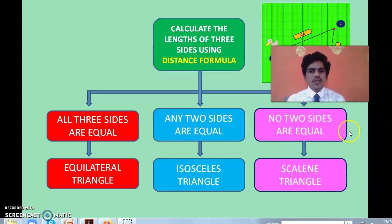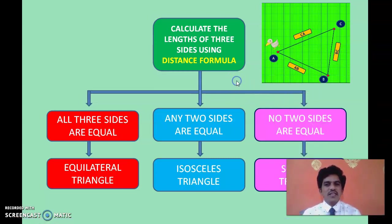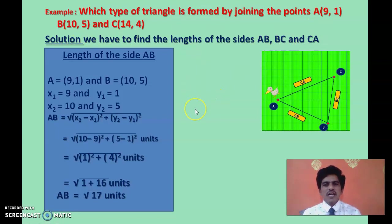To determine which type of triangle it is, first calculate the lengths of the 3 sides. If all 3 lengths are equal — equilateral triangle. If any 2 are equal — isosceles triangle. If all 3 are different — scalene triangle. That is how we classify triangles based on lengths of sides. Here is an example: Which type of triangle is formed by joining the points A(9,1), B(10,5), and C(14,4)?